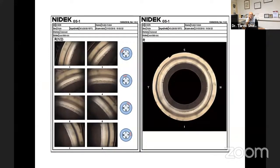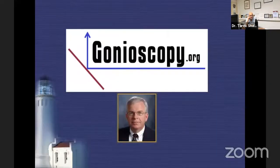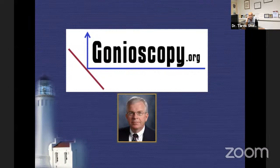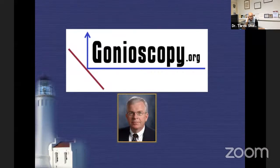There are fancy automated gonioscopy devices that can show the angle in many different aspects, but replacing a lens costing a few hundred dollars with a device costing tens of thousands is questionable at this point. One of the most interesting resources in ophthalmology is gonioscopy.org, curated by Lee Alward — an exceptionally good website I would refer you to for further knowledge about gonioscopy.